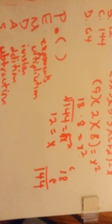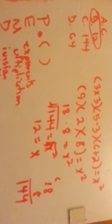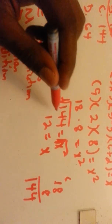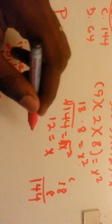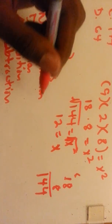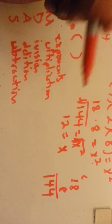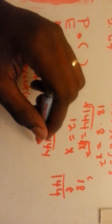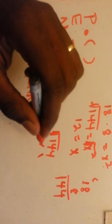X equals 12. And for those who may not know how to find a square root: the square root of a number is basically what number times itself equals that number. So 12 times 12 equals 144.